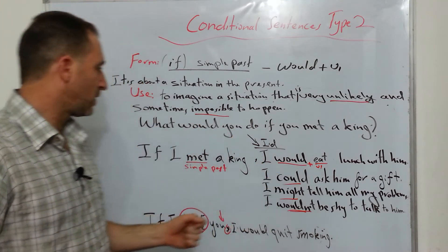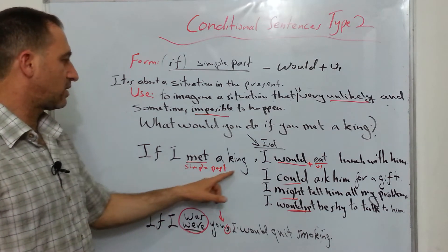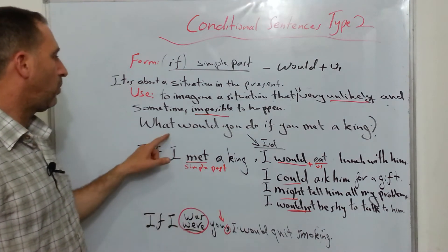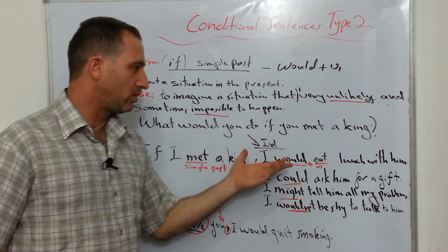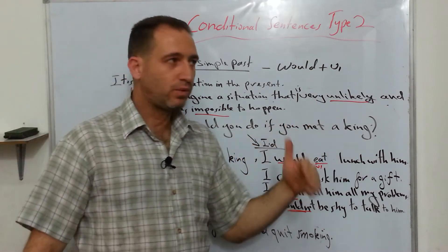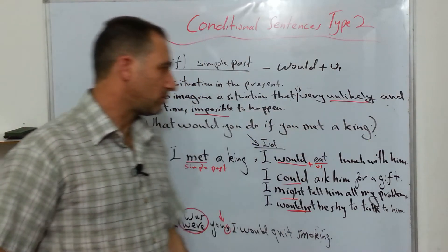How do we make questions? How do I make a question for this sentence, for example? What would you do? What would you do if you met a king?